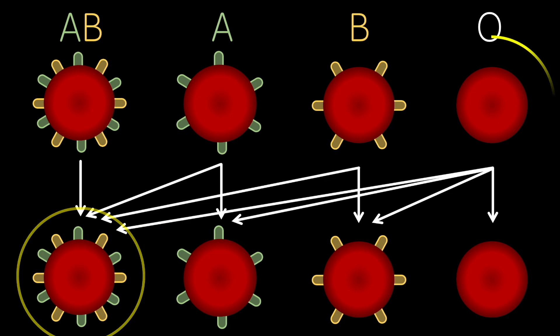Additionally, the O blood type is known as the universal donor as there are no antibodies that attack the antigenless blood cells and so they can be donated freely.